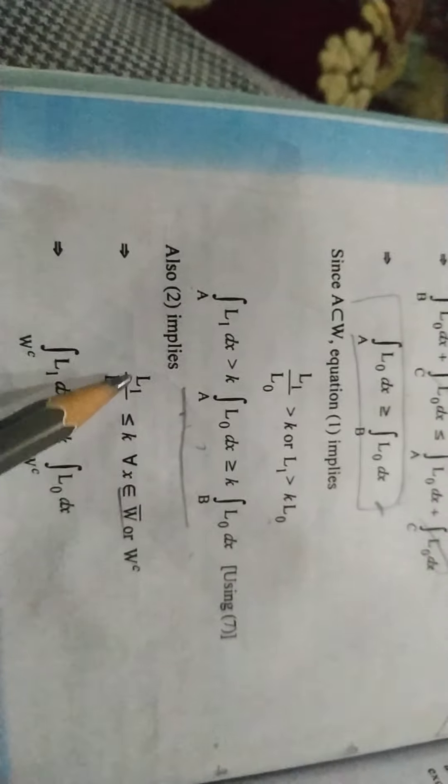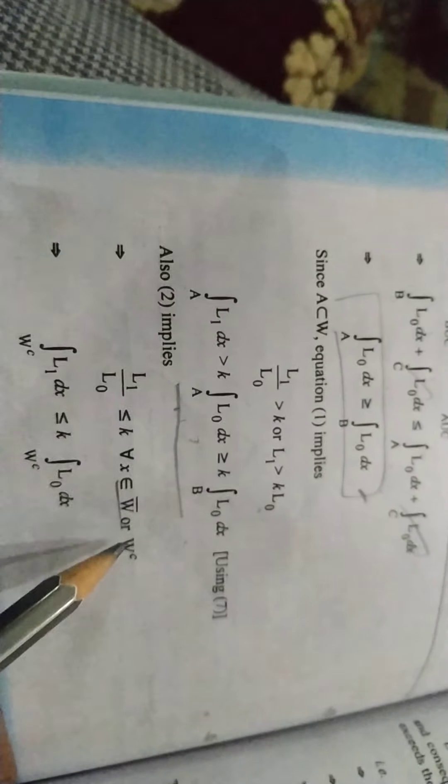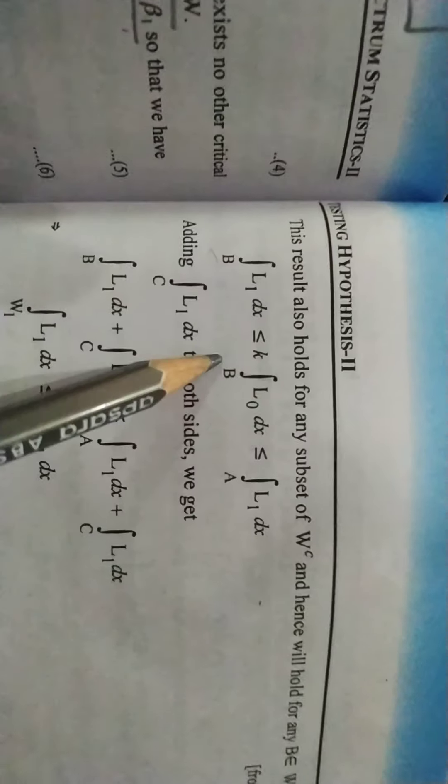Let me leave this. Equation number 2. Equation number 2 is L1, L0 and K. This is critical region. So I have put WC and WC. If it is WC, it will be B. This has proved it.